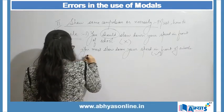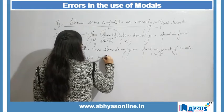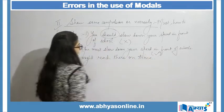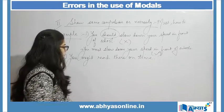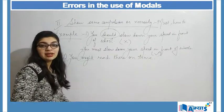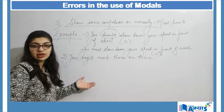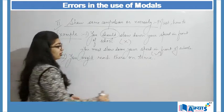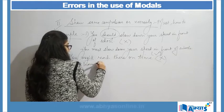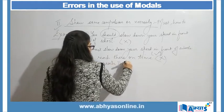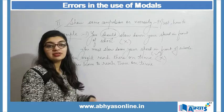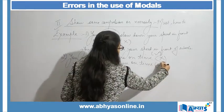Another example: 'You might reach there on time.' Here 'might' is used to make a prediction, but the sentence is supposed to show compulsion. So the sentence is wrong. The correct sentence is: 'You have to reach there on time.' Using 'have to' shows that it is a necessity and compulsory to reach there on time, making the sentence correct.